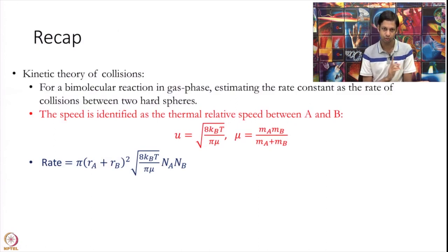Again, a quick recap. We note that this kinetic theory of collisions is valid only and only for bimolecular reactions. We identified the thermal speed as this U equals square root of 8 kT over pi mu, and this mu entered as a reduced mass Ma Mb over Ma plus Mb. We had gotten this final rate in the last module: pi times Ra plus Rb squared times square root 8 kT over pi mu times Na times Nb.